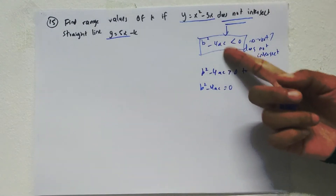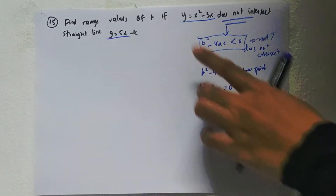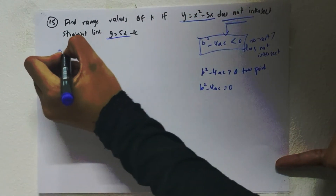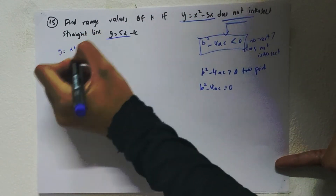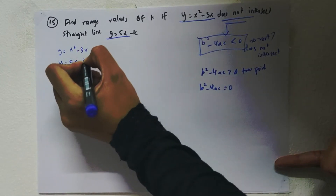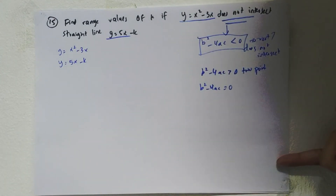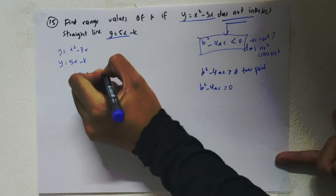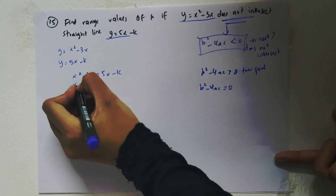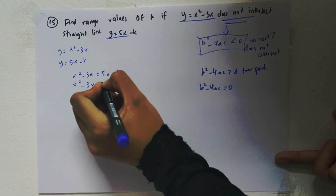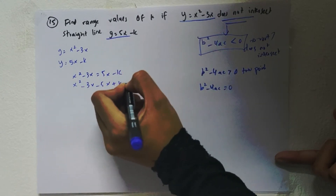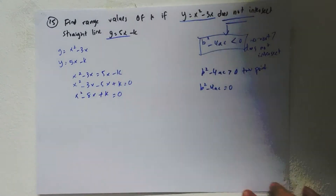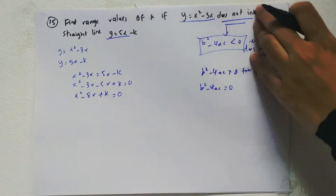In this case does not intersect, so you need to find what is b, what is a, what is c. You have y and y, so you can take y equals x squared minus 3x and y equals 5x minus k. So x squared minus 3x equals 5x minus k, giving x squared minus 3x minus 5x plus k equals zero, so x squared minus 8x plus k equals zero.